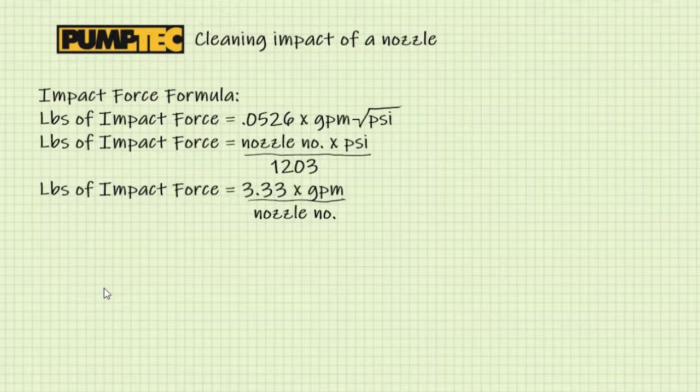Let's say you're making a pressure washer and you want to know the cleaning impact it has when sprayed on a surface. If you know the GPM and the PSI, you can use this first formula. If you know the nozzle number, which is more often the case, you can use one of the other two formulas.